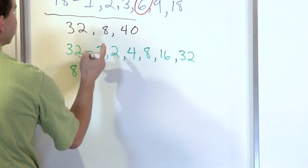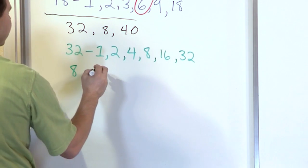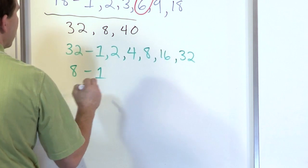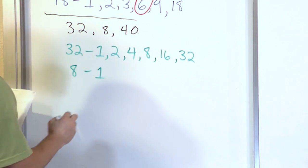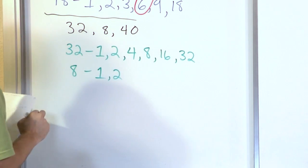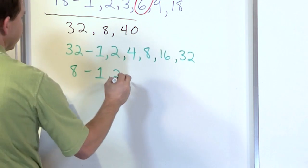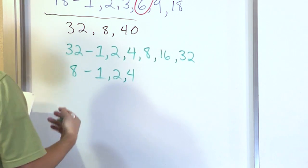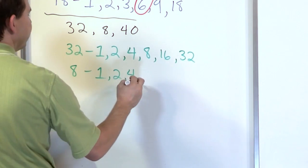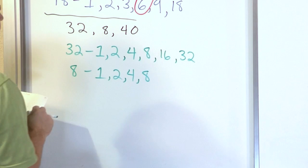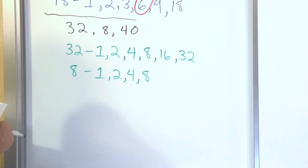The second number is 8 — let's go a little more rapidly. 1 divides into 8, 2 divides into 8, 3 doesn't, but 4 does divide into 8, 5 doesn't, 6 doesn't, 7 doesn't, 8 does divide into 8. So the factors of 8 are 1, 2, 4, and 8.